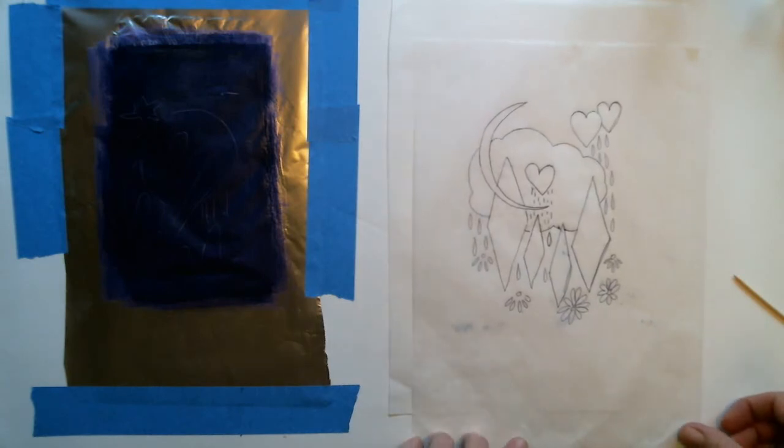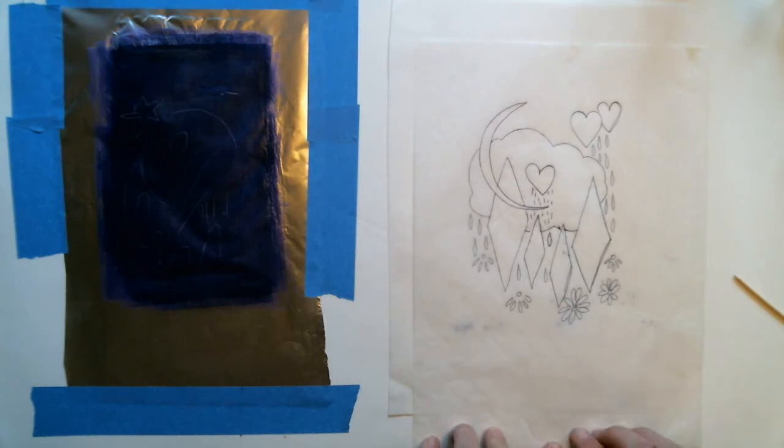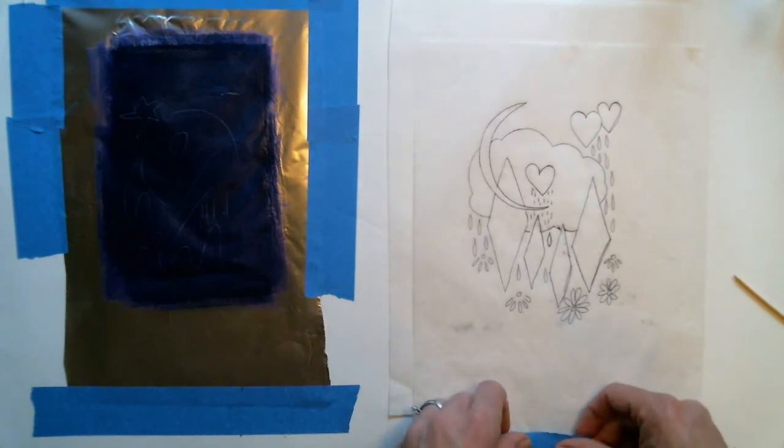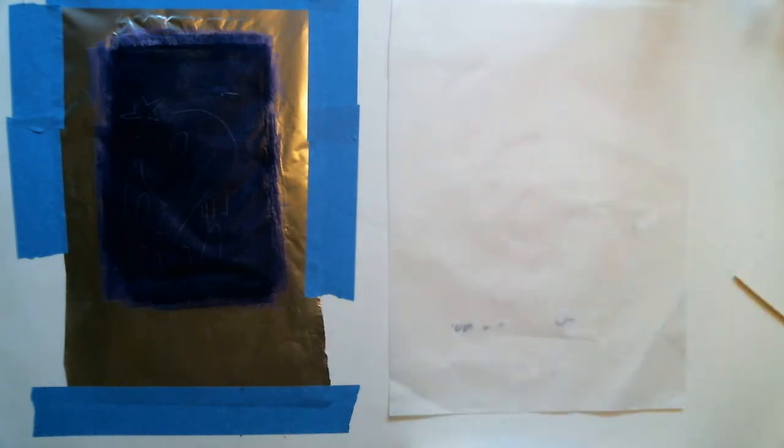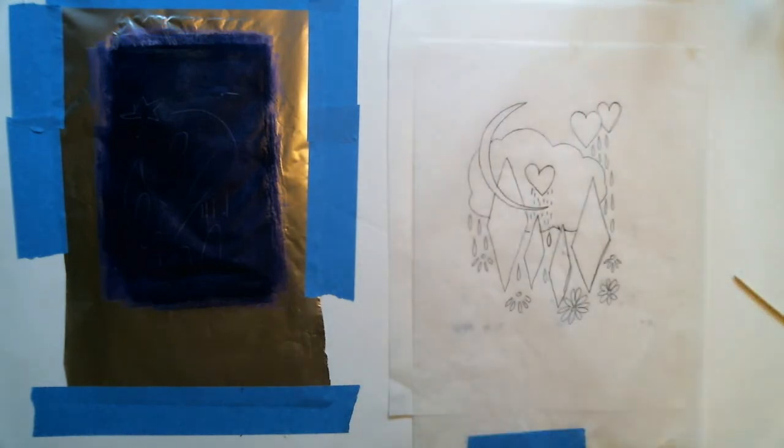Since I have this on tracing paper, I can see through and it's very easy to center, but you don't need to have the image on tracing paper in order to do this. You could have your drawing on copy paper, even notebook paper would work. I am going to tape it down so that I can lift it up and drop it back down.